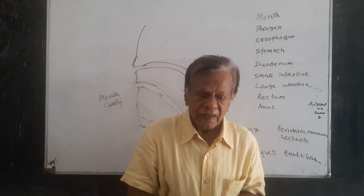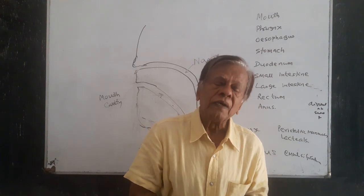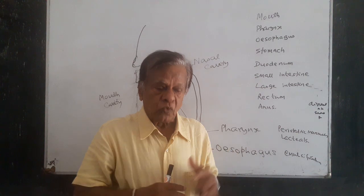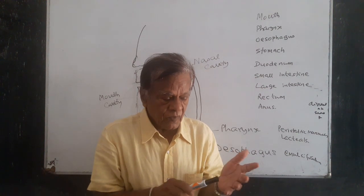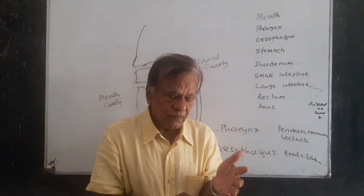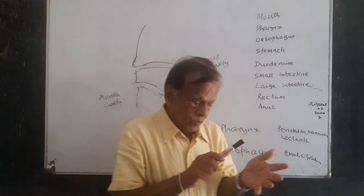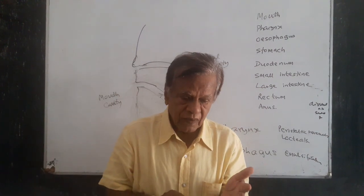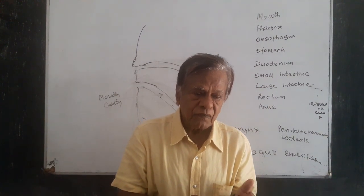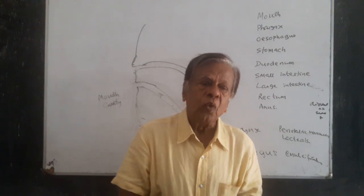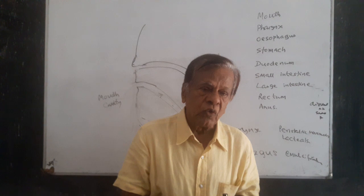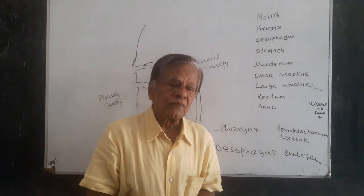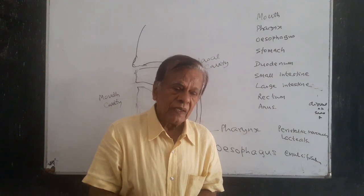First, let us start with the Human Digestive System. Our digestive system includes the mouth cavity, pharynx, esophagus, stomach, duodenum, small intestine, large intestine, rectum, and the anus.